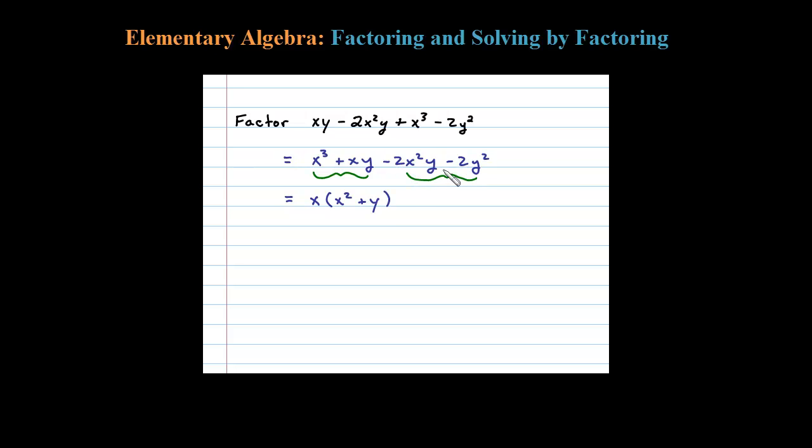Now for the second two terms, it looks like the GCF is negative 2y. Factoring out a negative 2y, then what will be left, you can see here, x squared plus y will be left. Let's double check that: negative 2y times x squared is negative 2x squared y, negative 2y times positive y is negative 2y squared.